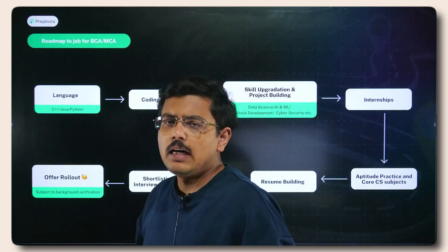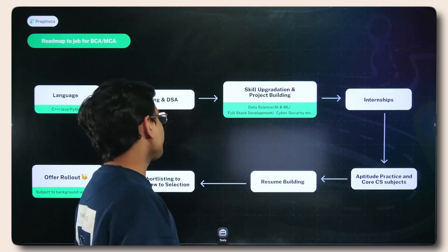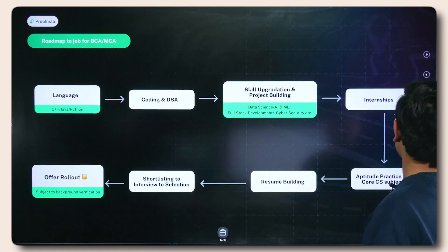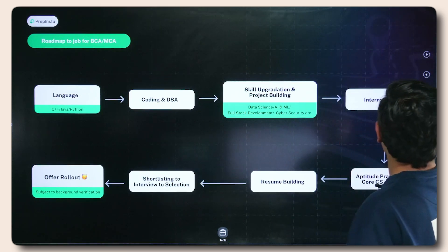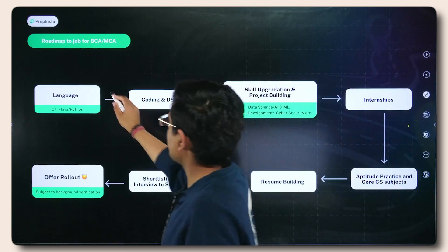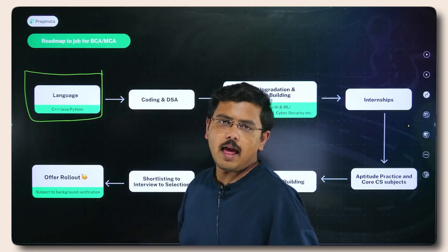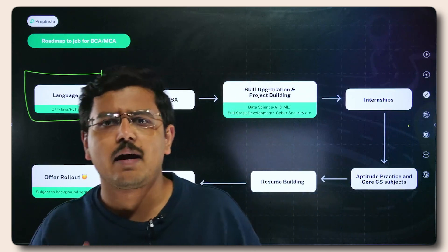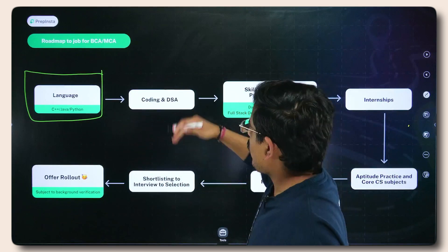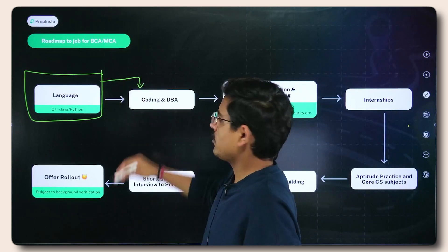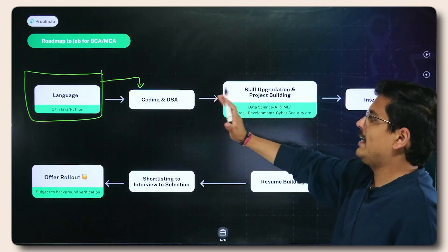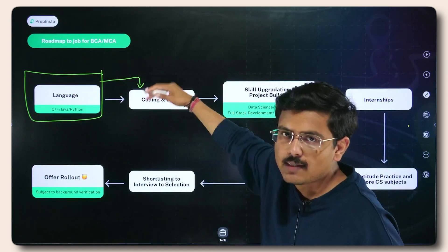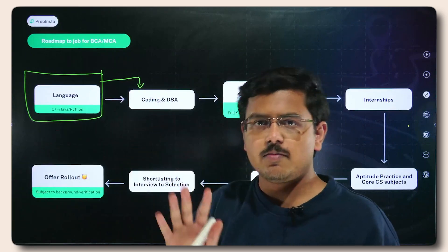This is the basic roadmap, and I'll explain each step in detail. The first step is language — this is something you should be very concerned about. Out of C++, Java, and Python, you have to learn one language. After that, you move to coding and DSA. Once coding and DSA is done, you go to skill upgradation and project building. We'll cover how to choose your language and how to tackle coding and DSA in the next slides.